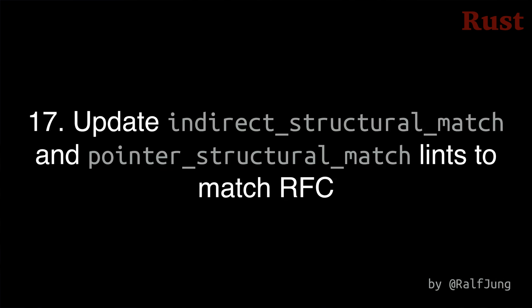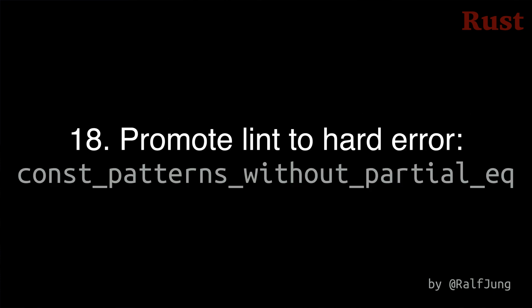Number 17: Two lints that will become hard errors soon have been updated so that the lint warnings now show up for all your dependencies as well. Hopefully the annoyance will help everyone fix their code before these become hard errors. Number 18: The lint introduced in Rust 1.74 that detects constants which don't implement PartialEq but are used in patterns has been promoted to a hard compiler error.